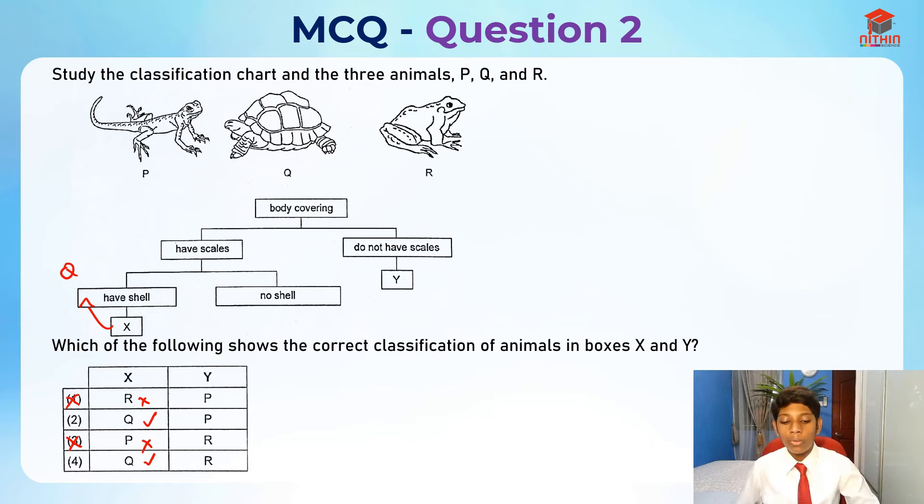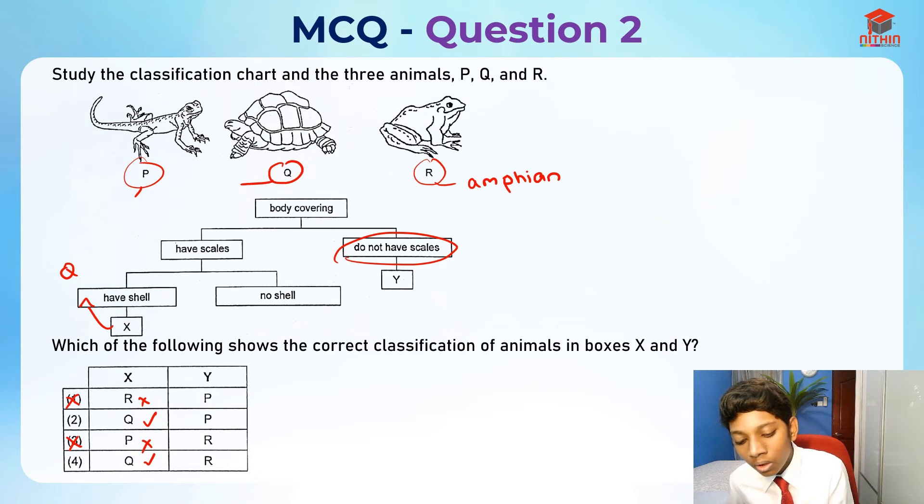Now we only need to find out Y. Y basically do not have scales. P is a lizard and it actually has scales because it's actually a reptile, and reptiles actually have scales. While R is actually an amphibian, and P and Q are actually reptiles. An amphibian does not have scales.